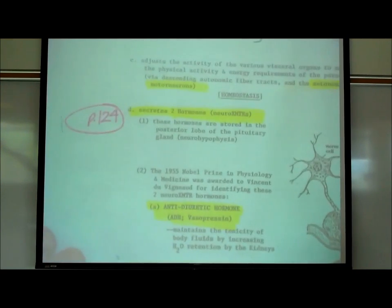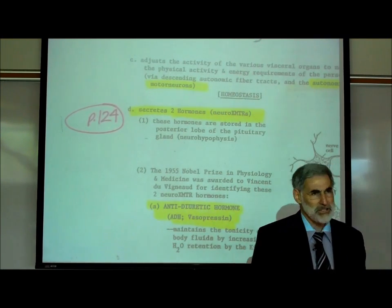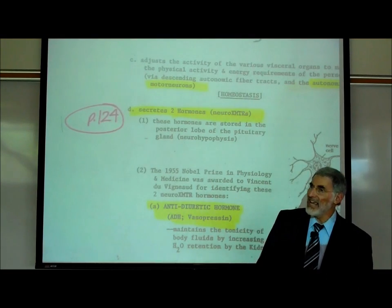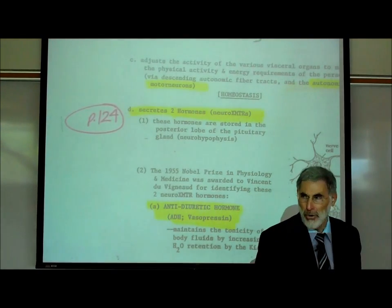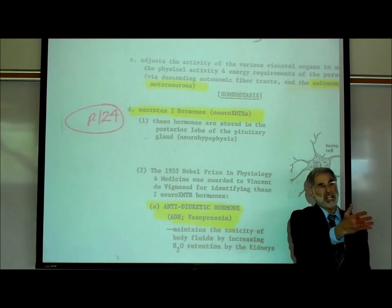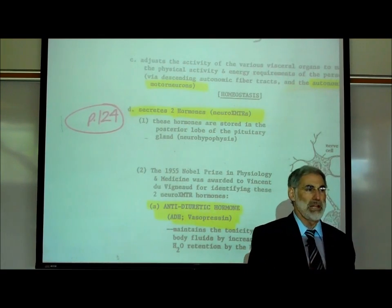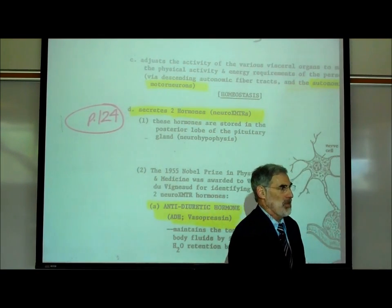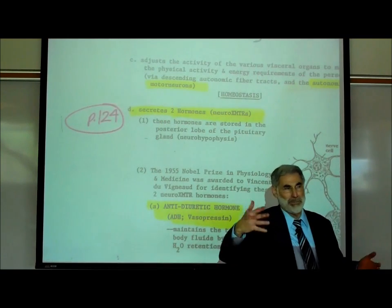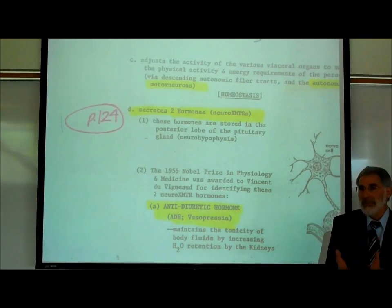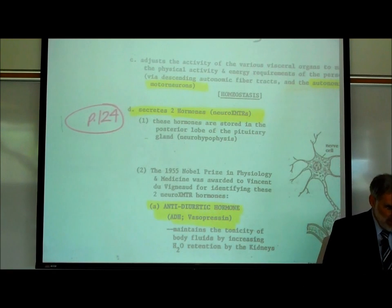The hypothalamus secretes two hormones. The hypothalamus is made up of neurons, so when these neurons release chemicals into the bloodstream, they are neurotransmitter hormones. This is similar to how sympathetic postganglionic motor neurons in the adrenal medulla release adrenaline — epinephrine — into the bloodstream. That's a chemical released by neurons that circulates in the bloodstream and acts as a hormone, and here's another example of the same thing.